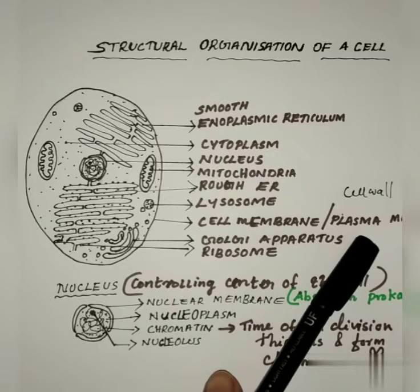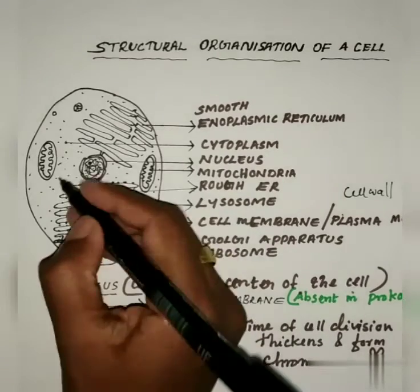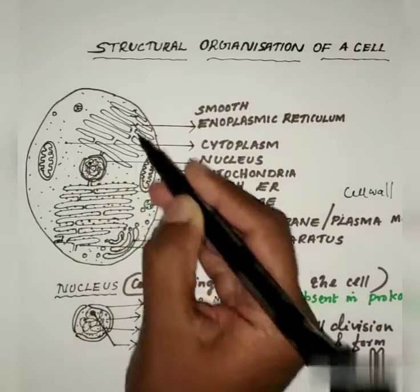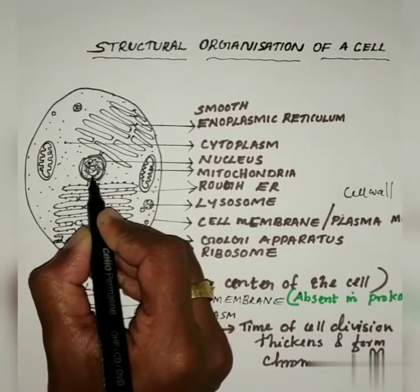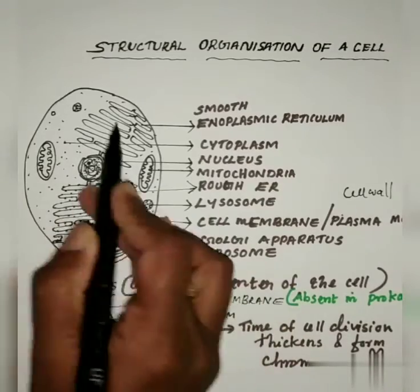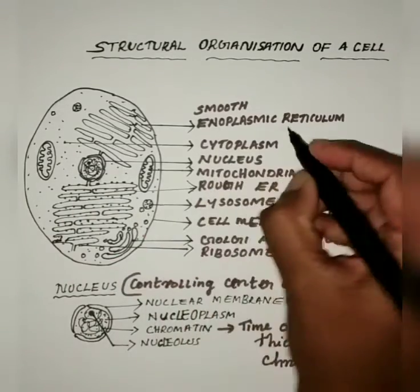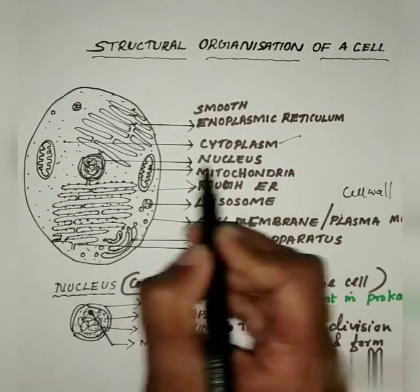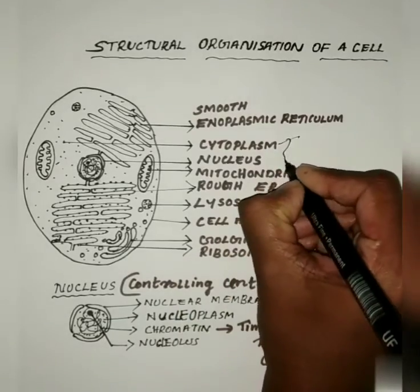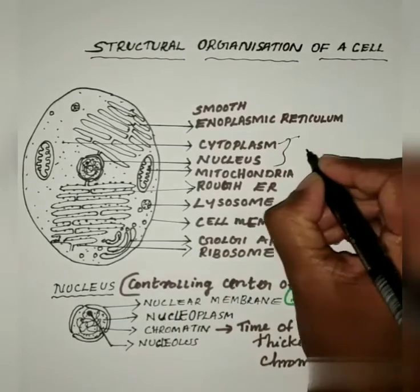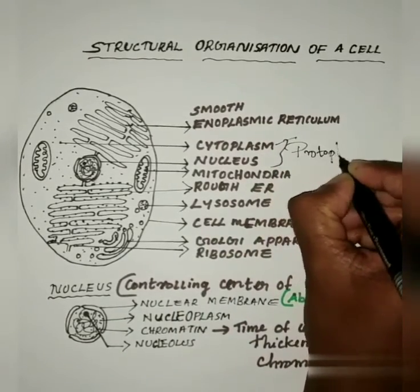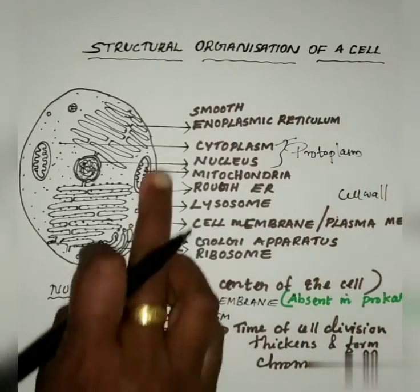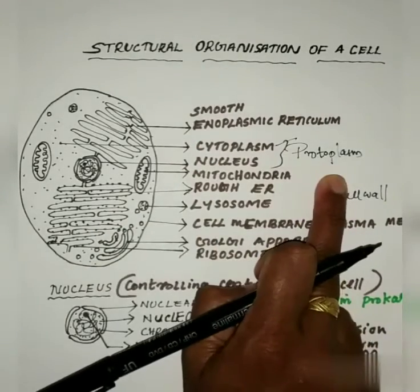Inside there is a fluid part. The fluid part inside the plasma membrane is called the cytoplasm, and in the middle the nucleus will be there. The fluid part is called cytoplasm and the middle portion is called the nucleus. Cytoplasm and nucleus together are called protoplasm.